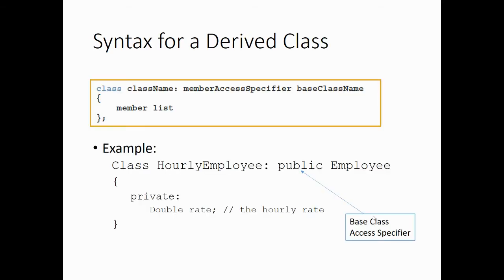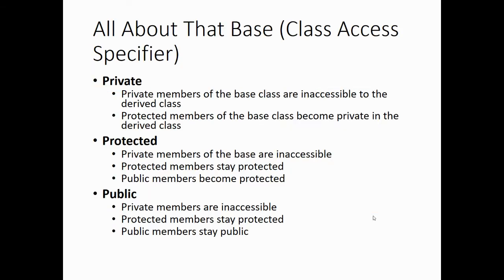The syntax for a derived class uses a colon followed by the member access specifier and the base class name. So an hourly employee in this example is a type of employee, and the base class access specifier is public. We need to talk about that base class access specifier, which we do on the next slide.